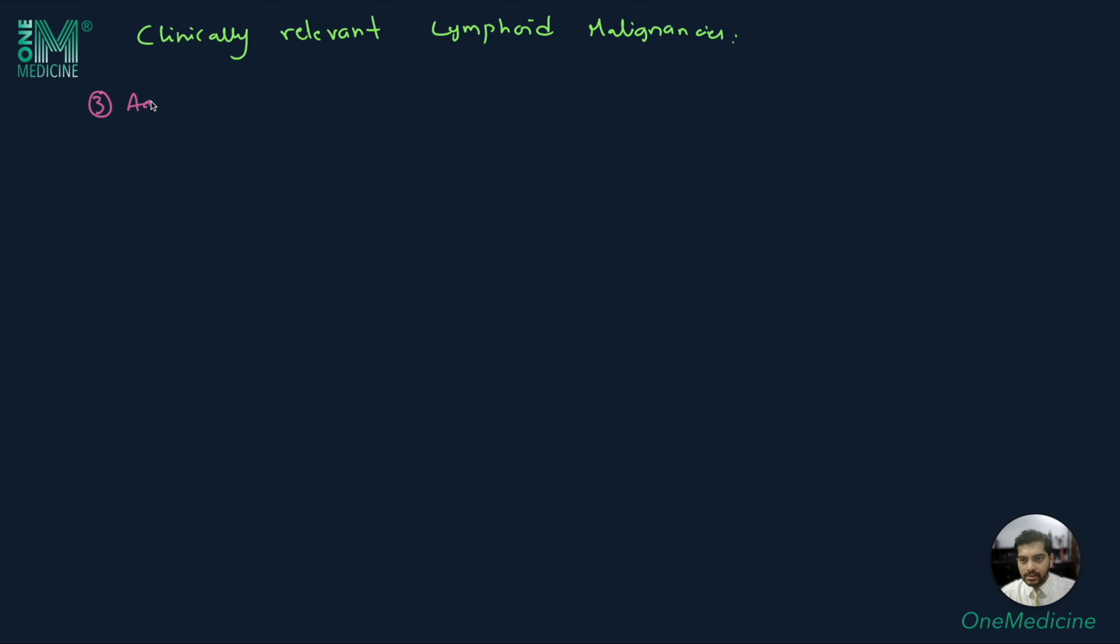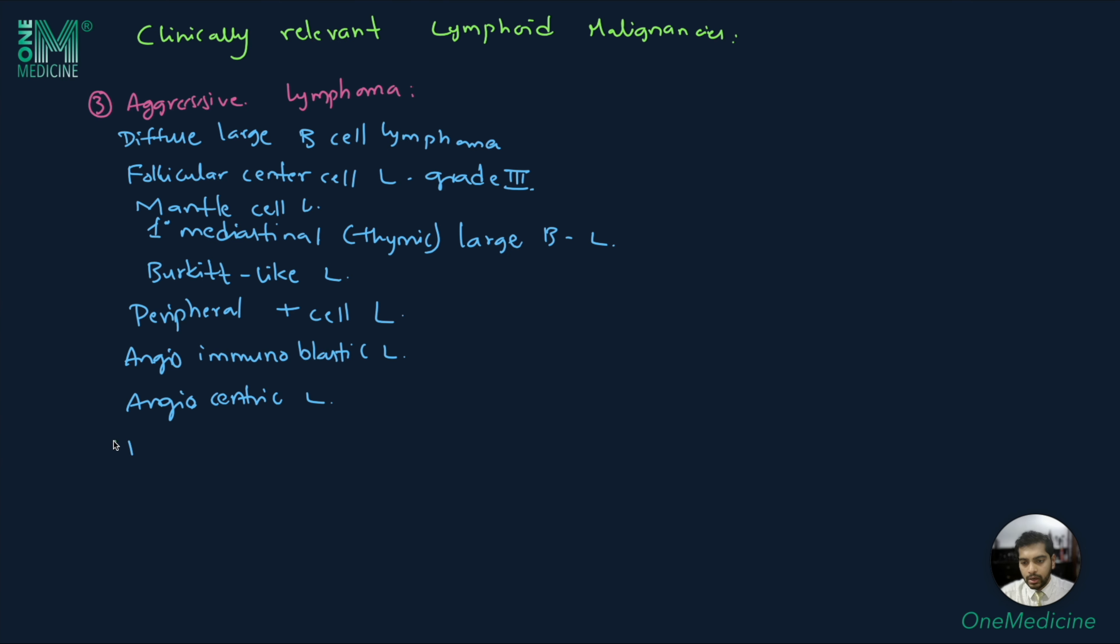The next type is aggressive lymphoma. These include diffuse large B cell lymphoma, follicular center cell lymphoma grade 3, mantle cell lymphoma, primary mediastinal or thymic large B cell lymphoma, Burkitt-like lymphoma, peripheral T cell lymphoma, angioimmunoblastic lymphoma, angiocentric lymphoma, intestinal T cell lymphoma, and anaplastic large cell lymphoma.